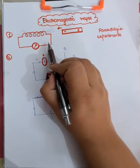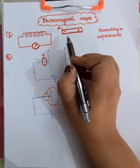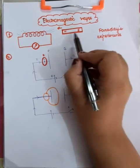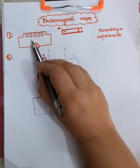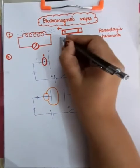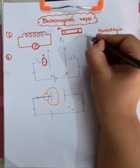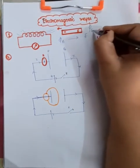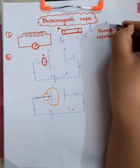But is the reverse situation true? Can a changing electric flux produce a magnetic field? Here, changing magnetic flux is producing electric field — phi_B is changing and that's creating electric field. But the question is: if phi_E, the electric flux, changes, can it create magnetic field B?